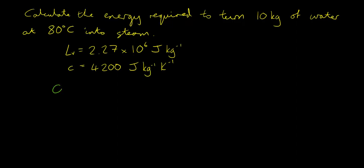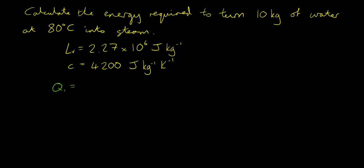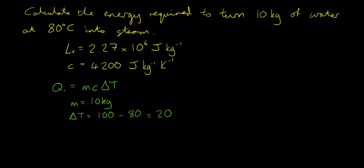For part one, Q₁ — the energy to heat the water from 80°C to 100°C — equals mcΔT, the specific heat capacity equation. m = 10 kg, ΔT = 100°C − 80°C = 20°C (or 20 K), and the specific heat capacity of water is 4,200 J/kg/K. So Q₁ = 10 × 20 × 4,200.